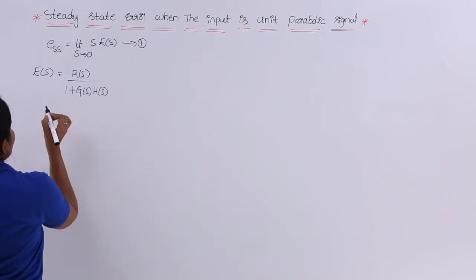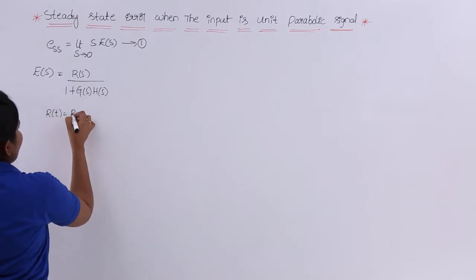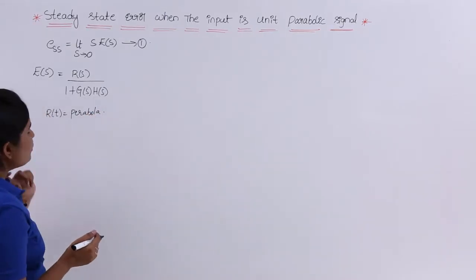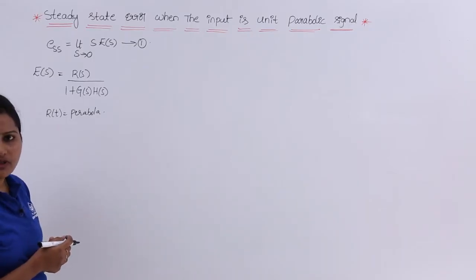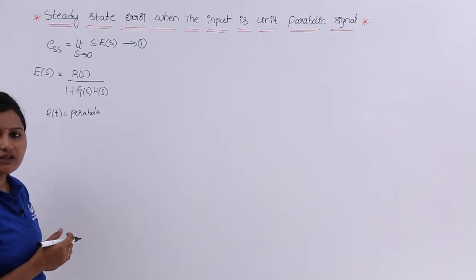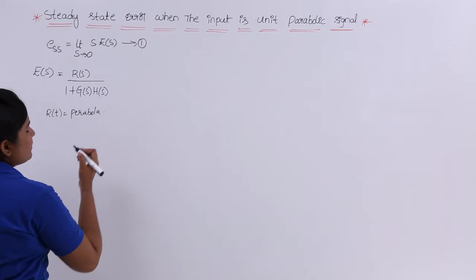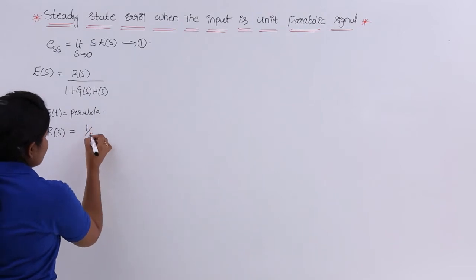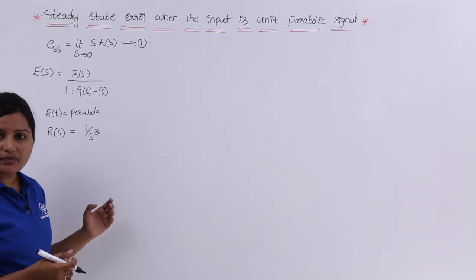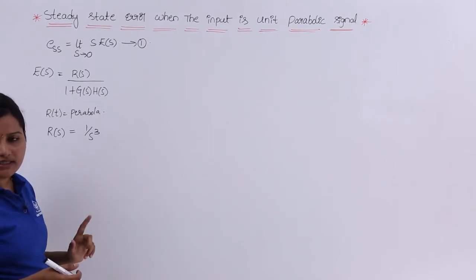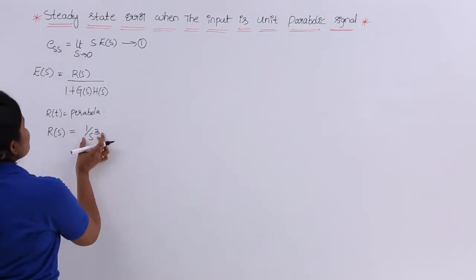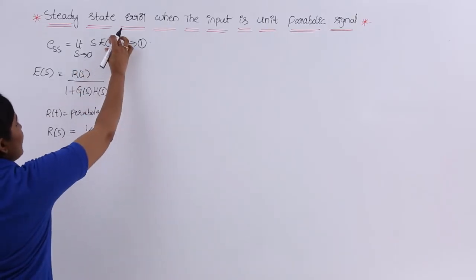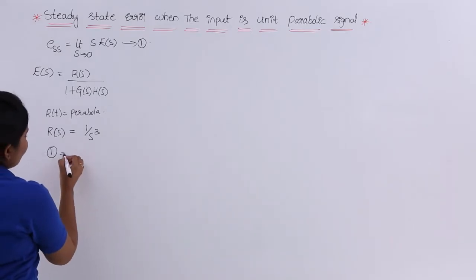So here E(s): R(t) is equivalent to parabola. The Laplace transform of parabola is nothing but 1/s³. So R(s) is nothing but 1/s³. We know the Laplace transform of parabola is equivalent to 1/s³. I am substituting this value into the E(s) equation, replacing R(s) in equation 1.